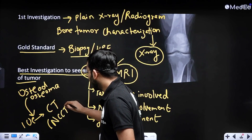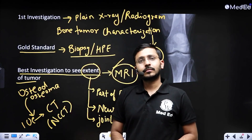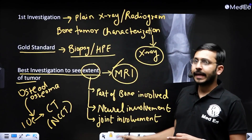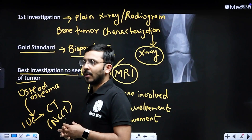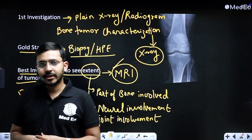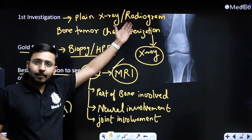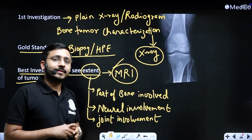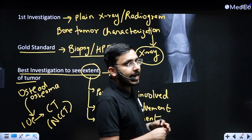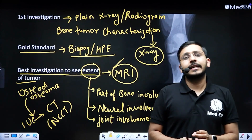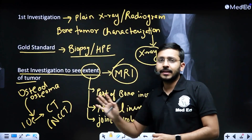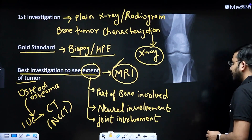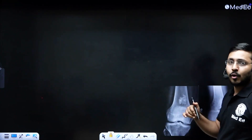So these are the basic concepts about bone tumors in general: the initial investigation is a plain x-ray, the gold standard is histopathological examination, and the best investigation to see the extent of the tumor is MRI.